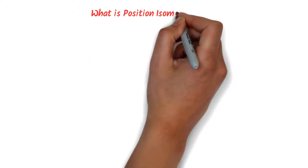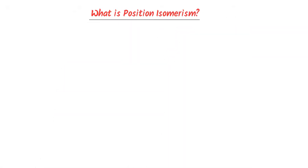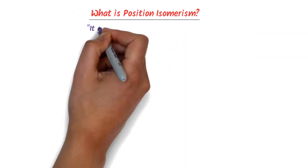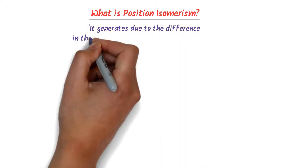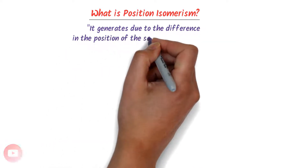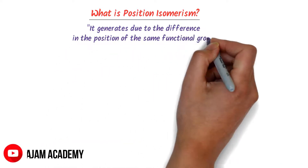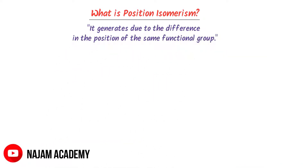What is position isomerism? This type of isomerism is generated due to the difference in the position of the same functional group on the carbon chain.